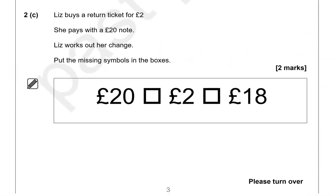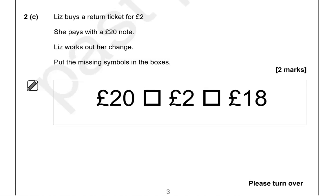Leist buys a return ticket for two pounds. She pays with a twenty pound note. Leist works out her change — put the missing symbols in the boxes. She's paying with a twenty pound note for a two pound ticket, so twenty take away two gives us, or equals, eighteen.